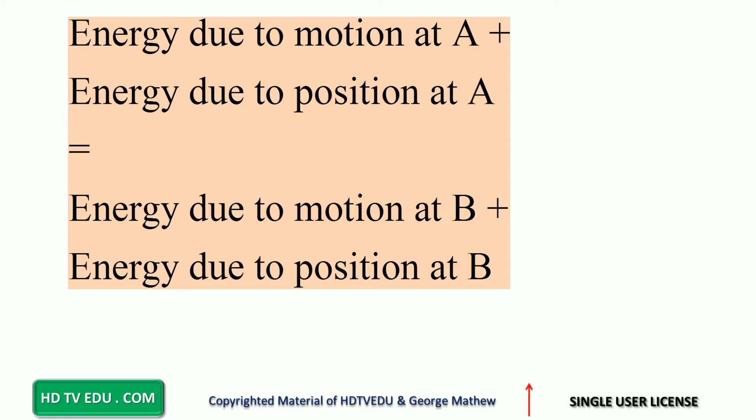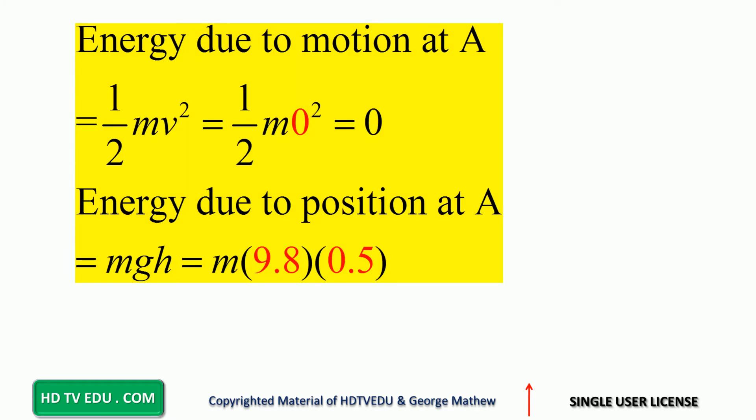Equals energy due to motion at point B, which is one half mv squared, plus energy due to position at B, which is zero. So energy due to motion at point A is zero because we are starting from rest, zero speed, so we have zero kinetic energy at the start, at point A.